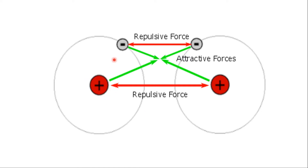One atom has protons, electrons, and neutrons. Since neutrons are electrically neutral, they do not take part in electrostatic interactions. Like charges repel each other and unlike charges attract each other. So the interaction between proton-proton or electron-electron is repulsive, and the interaction between proton and electron is attractive in nature.